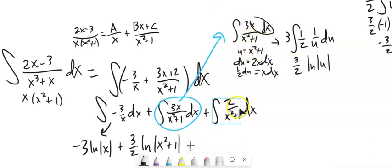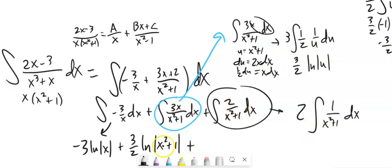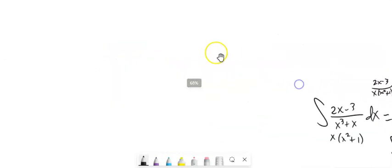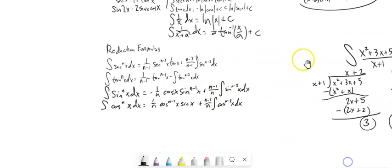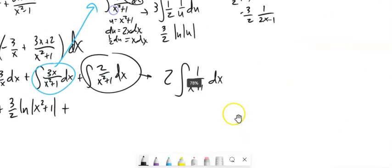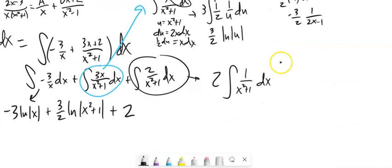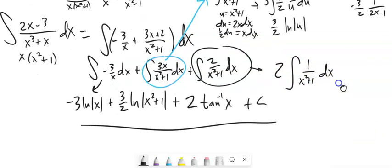And then looking at this piece, notice this is in that form x squared plus a squared, where a is one. If I look at my lookup, it's in this form. So it's one over a, which is one, inverse tangent of x over a, and a is one. So this will be two. This would be inverse tangent, arctangent of x plus, and there it is.